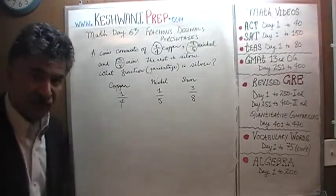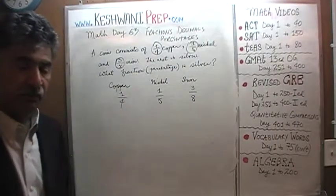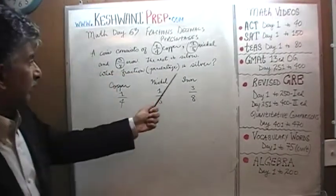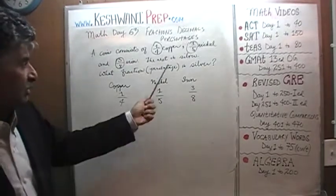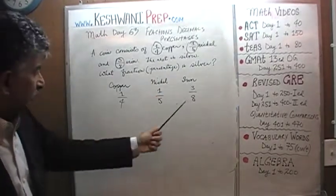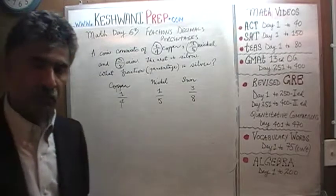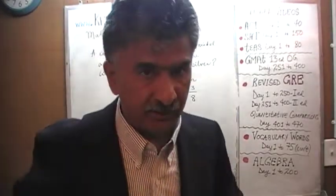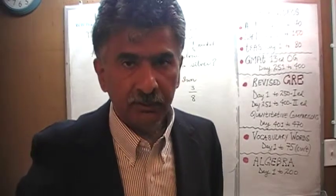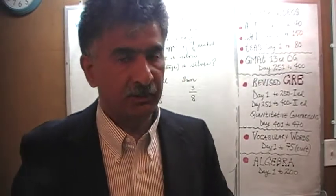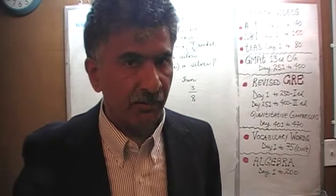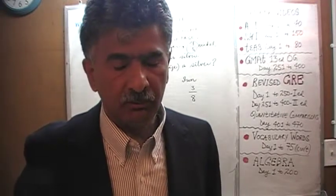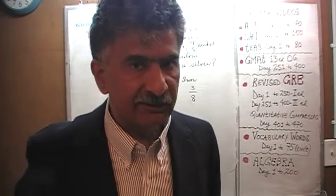To see what they add up to so we can figure out the remainder part which is silver. In order to add these three fractions, we have to have a common denominator, preferably the least common denominator. The least common denominator is also known as the LCM, the smaller the better.